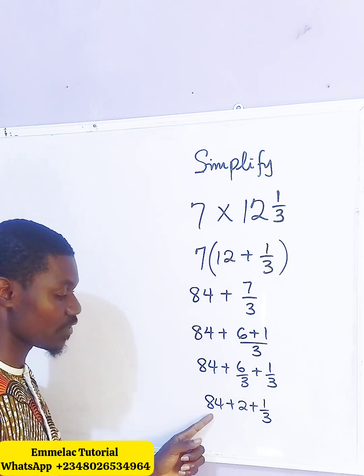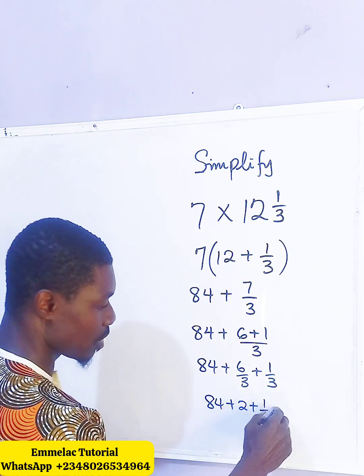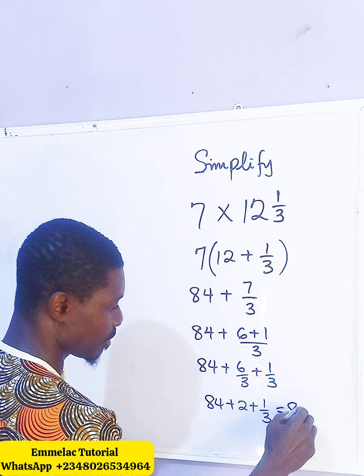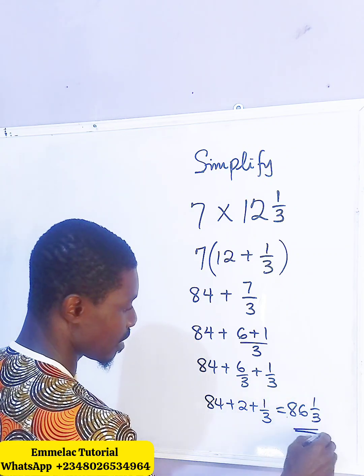So 84 plus 2 gives us 86, plus 1 all over 3. Final answer: 86 and 1/3.